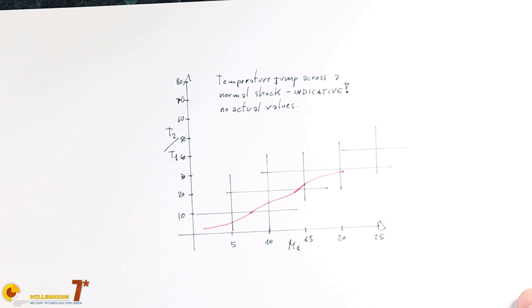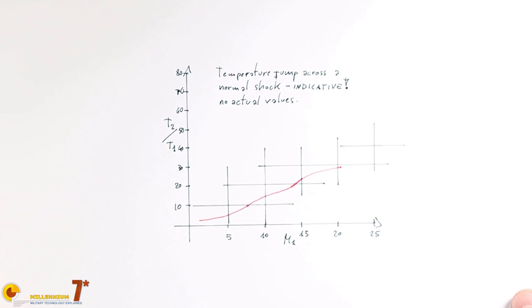For example, the SR-71 while cruising around Mach 3 reached external temperatures around 600 Kelvin. At speeds between Mach 8 and 10 — the design speed of hypersonic cruise missiles currently in development — temperatures might easily exceed 2000 Kelvin, particularly at lower altitudes where air density is still high. It is easy to understand that this is a big engineering problem.